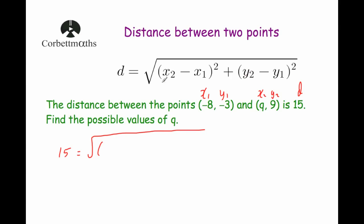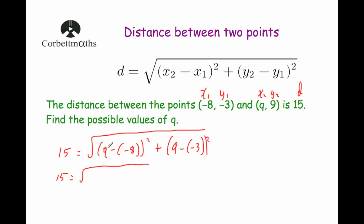Substituting into the formula: 15 equals the square root of x2 minus x1 squared plus y2 minus y1 squared. So x2 is q minus x1 which is minus 8, all squared, plus y2 which is 9 minus y1 which is minus 3, all squared. Simplifying: q minus minus 8 becomes q plus 8, squared. And 9 minus minus 3 is 9 plus 3, which is 12, so plus 12 squared, which is 144.